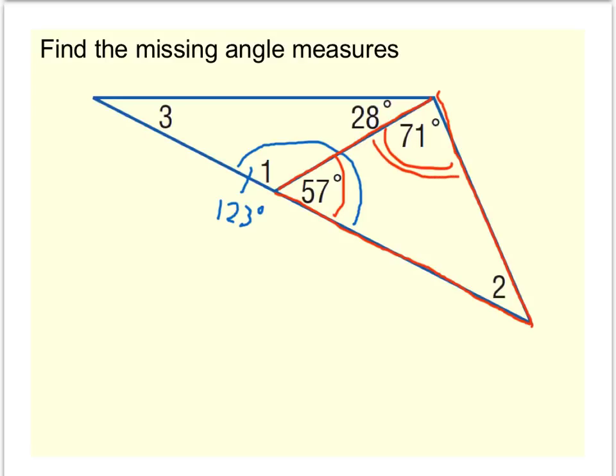According to the Triangle Sum Theorem, those 3 angles together add up to 180 degrees. So we can solve for angle 2 by adding the 2 angles together and then solving for the 3rd. Solving for angle 2 gives you 52 degrees.